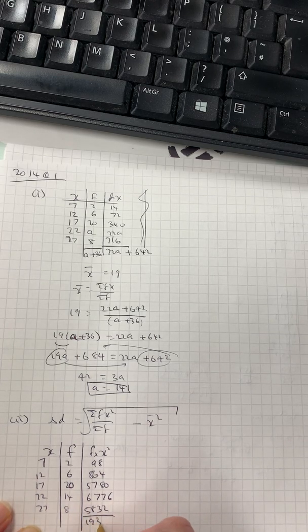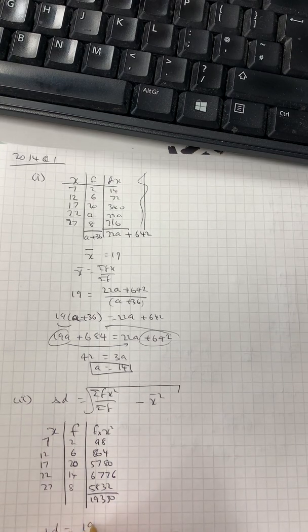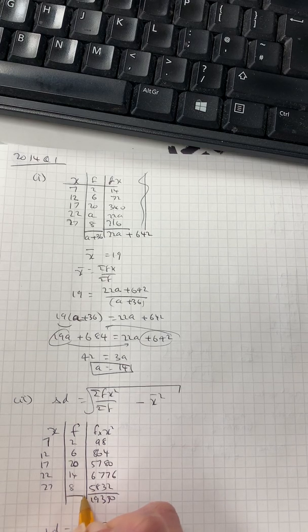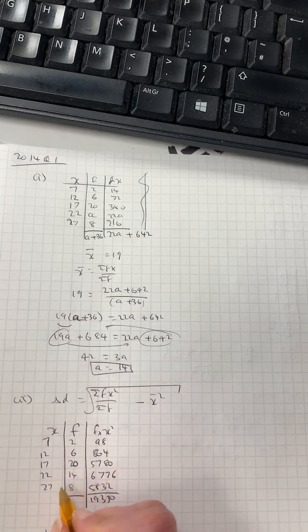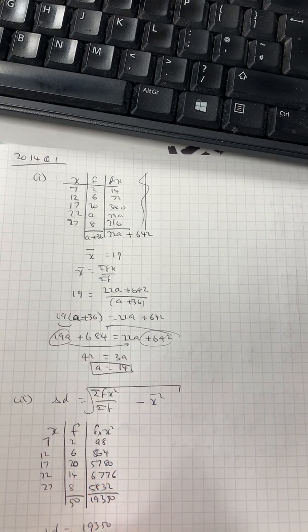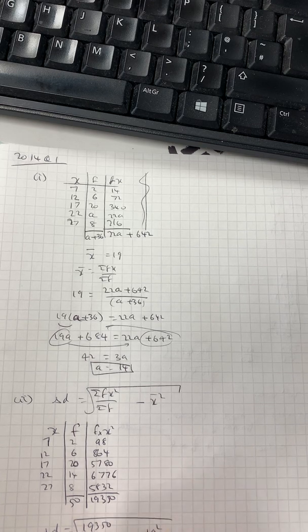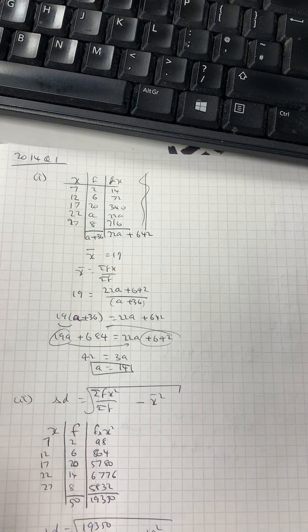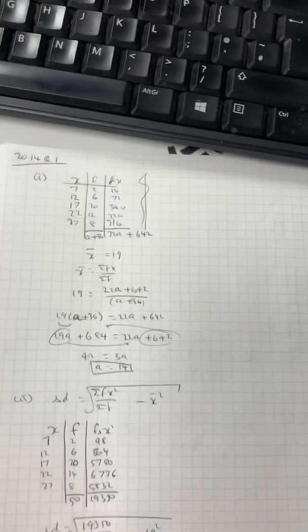So the standard deviation is 19350. The total number here is 50. So 50 minus the mean, which we knew, 19 squared. Again, just the number crunching in the calculator. Thus a standard deviation of 5.1.